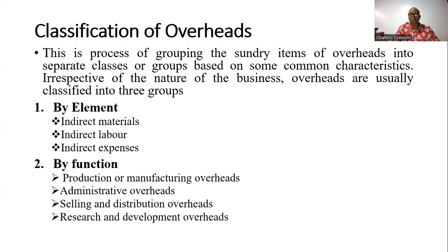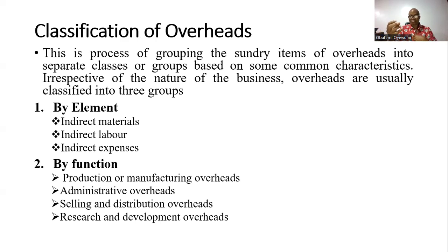For example, when we talk about indirect material, we talk about supplies — oil, lubricants that are used in factories to fuel or generate power within the factory. For indirect labor, we talk about the cost of employees that are not remunerated based on products or units; they are remunerated based on passage of time — for example, the supervisor or the factory manager. Those are indirect labor. And indirect expenses also relate to passage of time — expenses like rent and insurance.